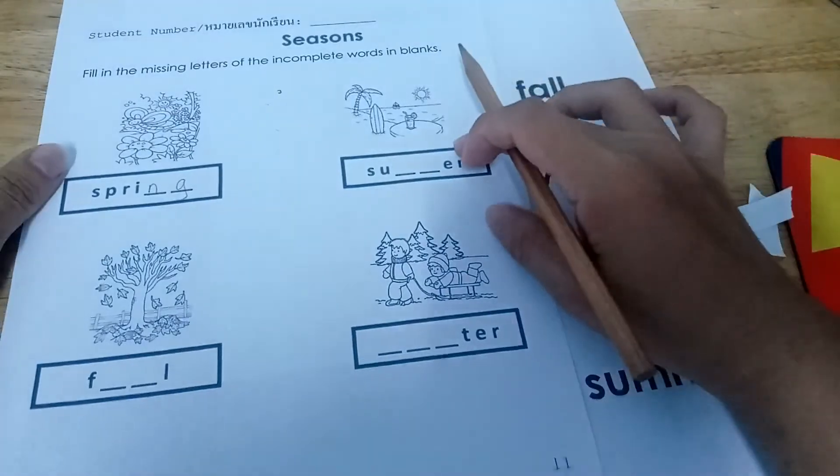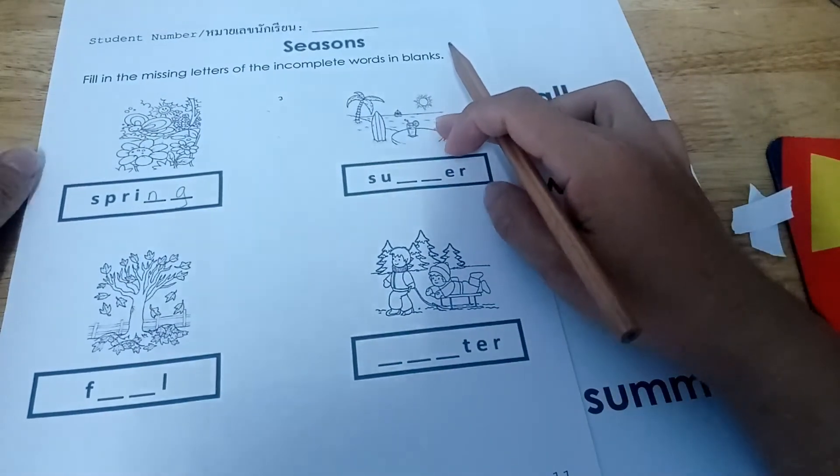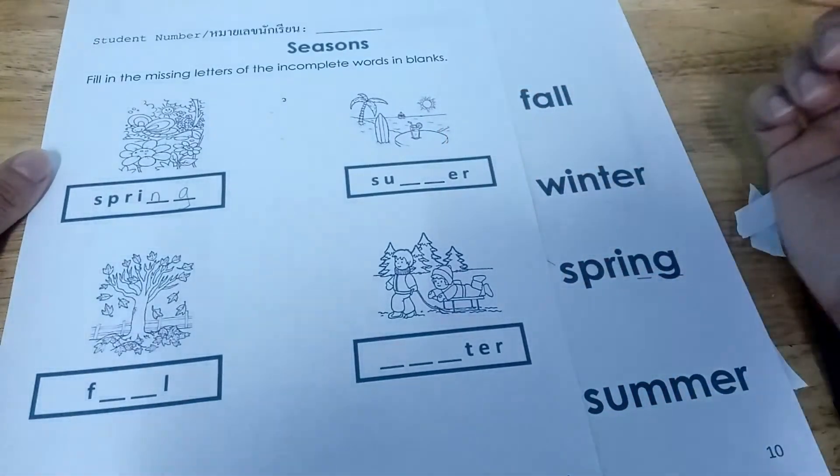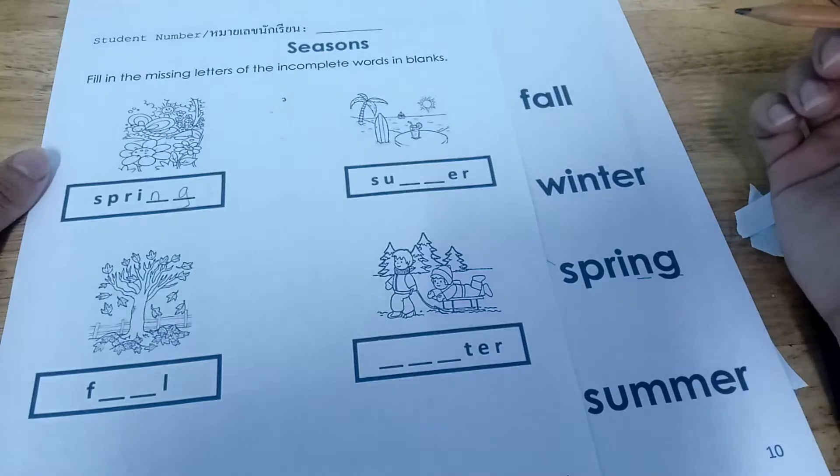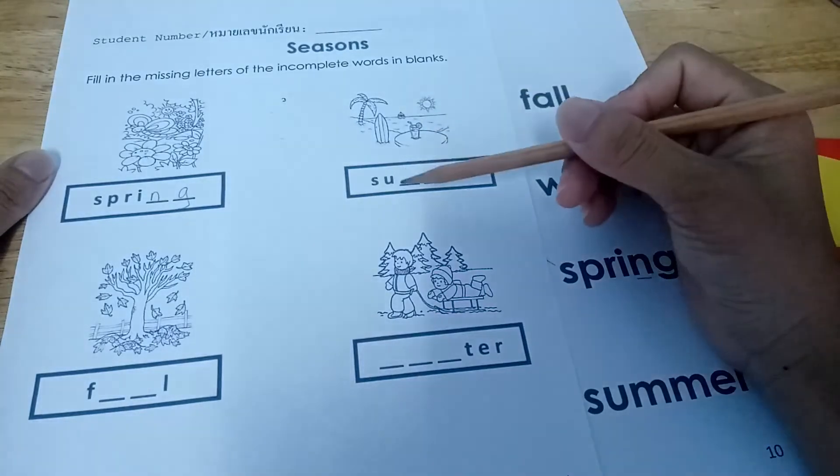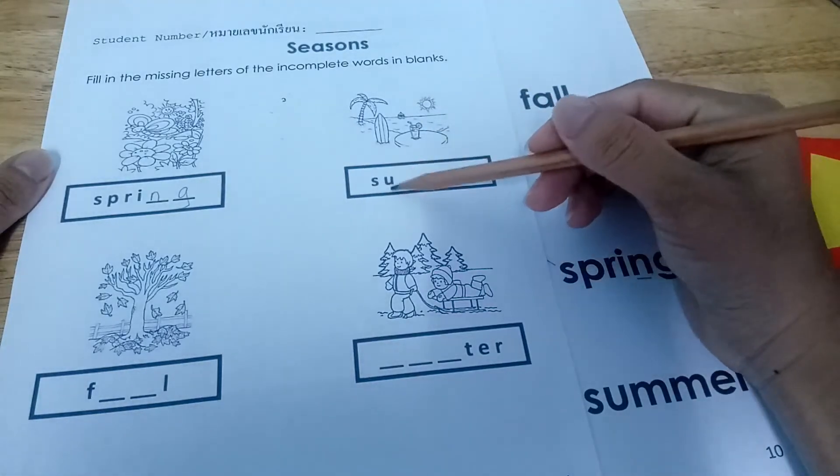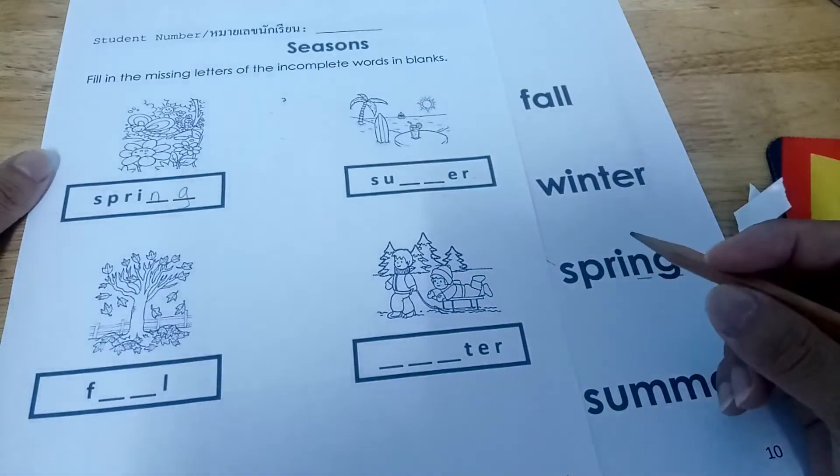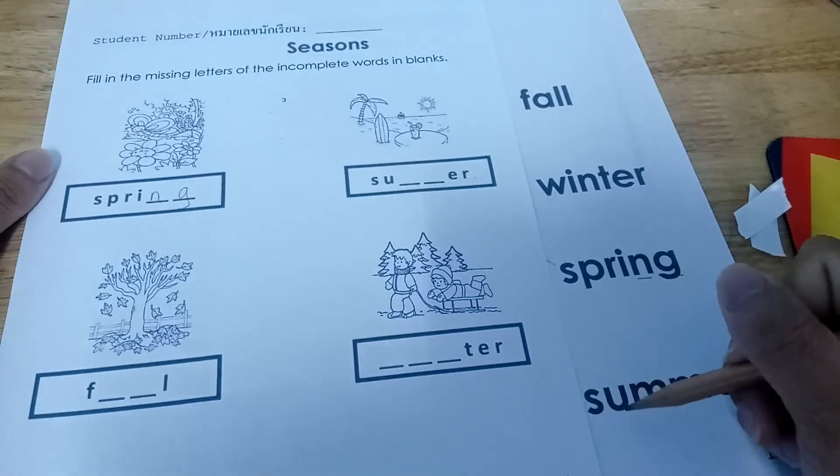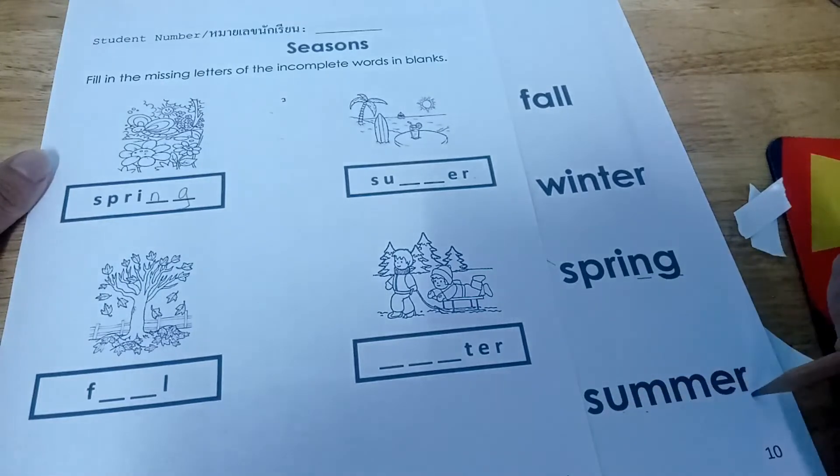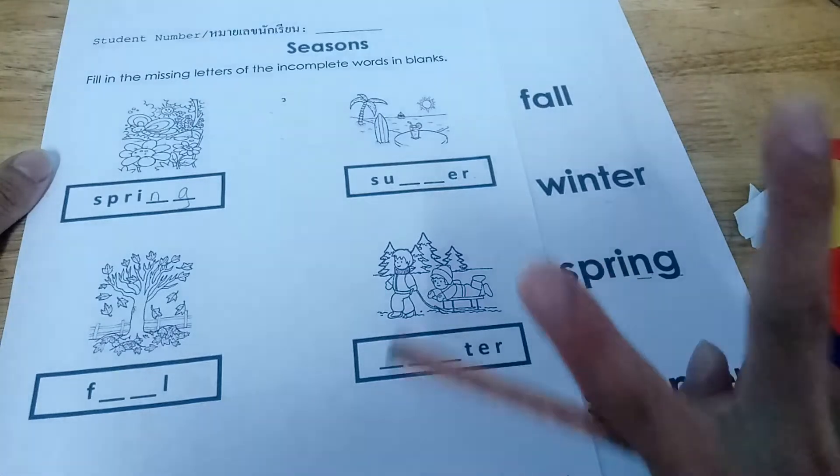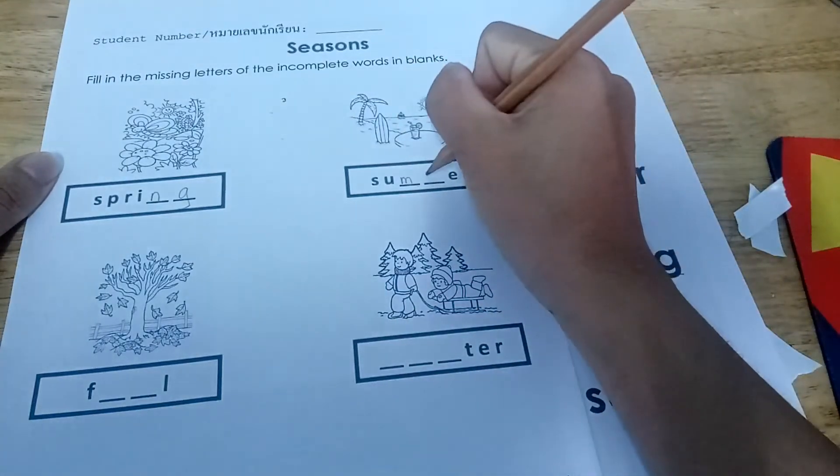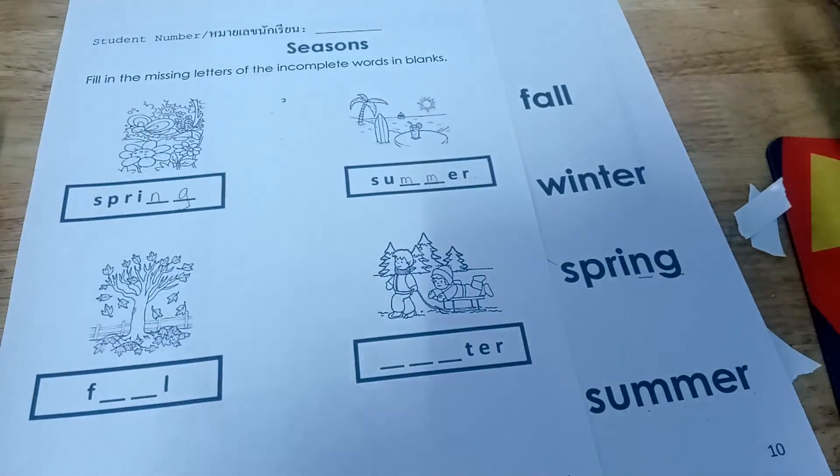And this one, this is summer. Again, let's say summer. Okay, what are the missing letters? Okay, where do you think it's spelled here? S-U-M-M-E-R. Okay, summer spell as S-U-M-M-E-R. There are two M, double M. So, let's write the missing letters. That's the double M.